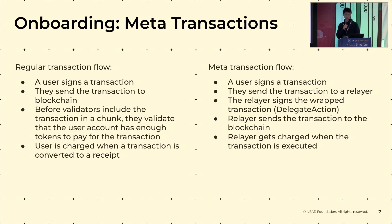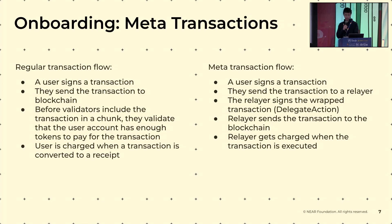Let's dive deeper technically to look at how those things actually work. Before we talk about metatransactions, let's first look at how a regular transaction works. A user sends a transaction to the blockchain, and then the validator does some validation before including the transaction in a block — checking that the user has enough balance to pay for it. The user is charged when the transaction is converted to a receipt, meaning it is actually executed on-chain. The metatransaction flow is generally similar, except instead of sending the signed transaction to the blockchain directly, the user sends it to a relayer, which wraps it in a new transaction, signs it, and sends it to the blockchain. When the transaction is executed, the relayer gets charged.